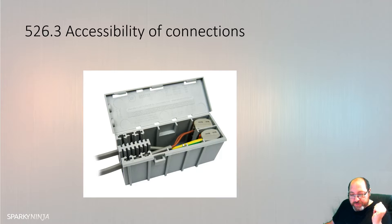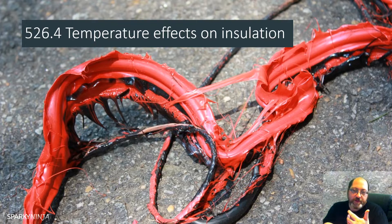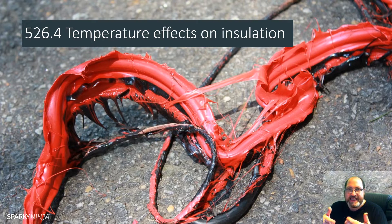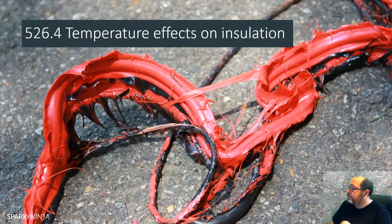We then have 526.4: where necessary, precautions will be taken so the temperature attained by a connection in normal service will not impair the effectiveness of the insulation of the conductors connected to it, or any insulating material used to support the connection. You've got to understand if there is thermal cycling or rapid changing loading, there will be an overall heating effect that may be inherent on the cabling or adjacent cabling. You have to consider the working temperatures of all connections.